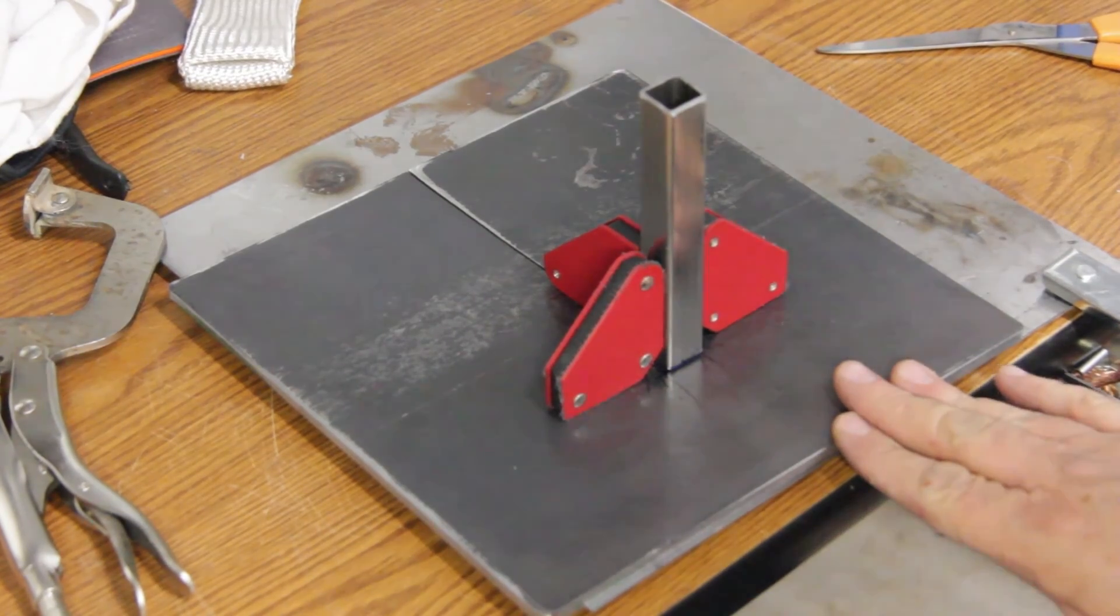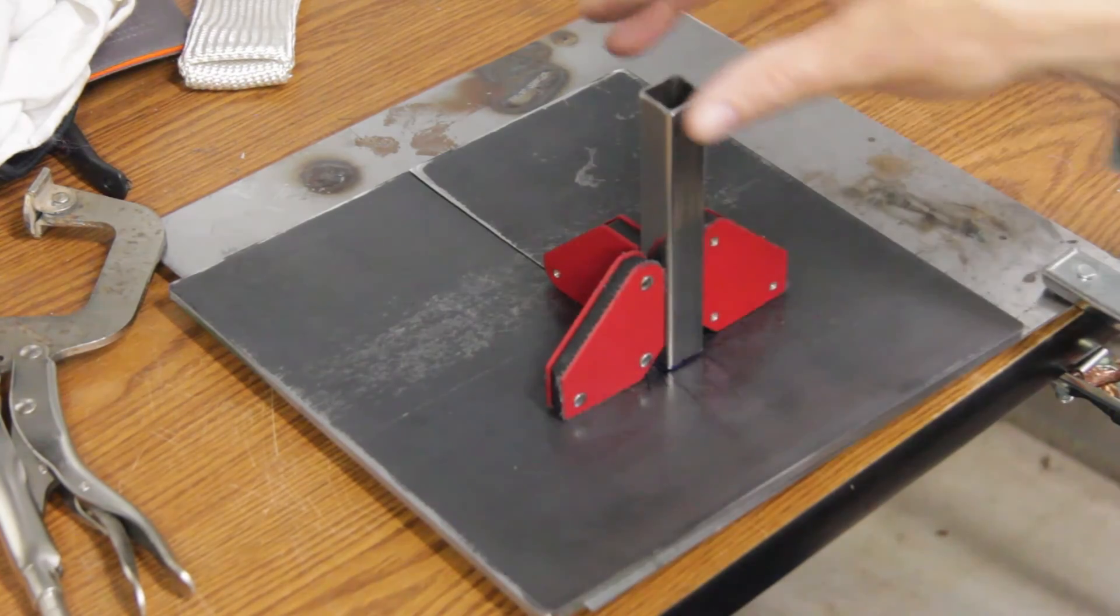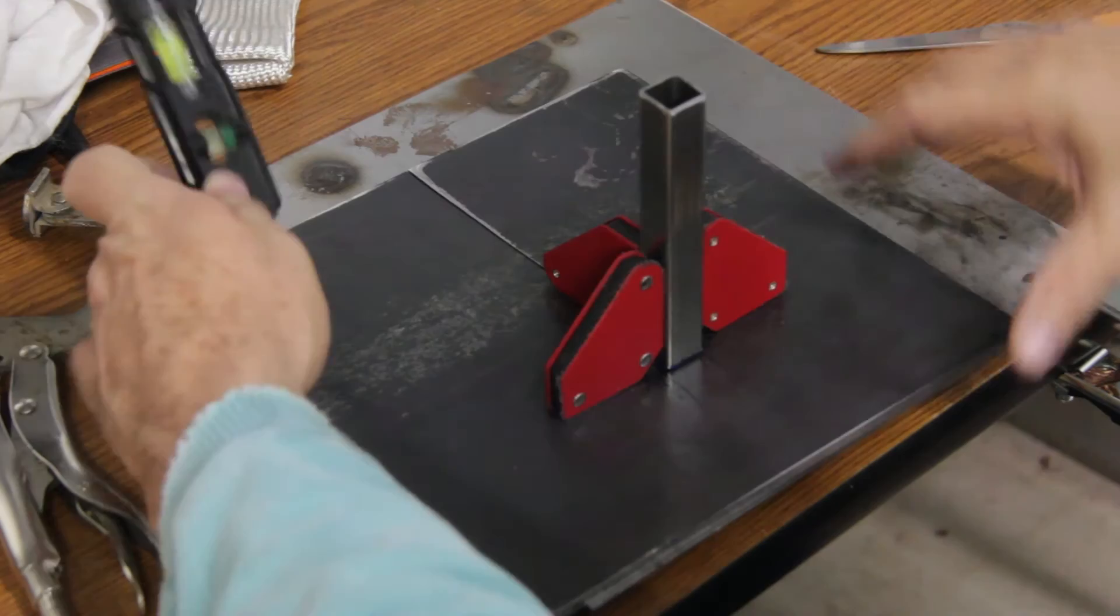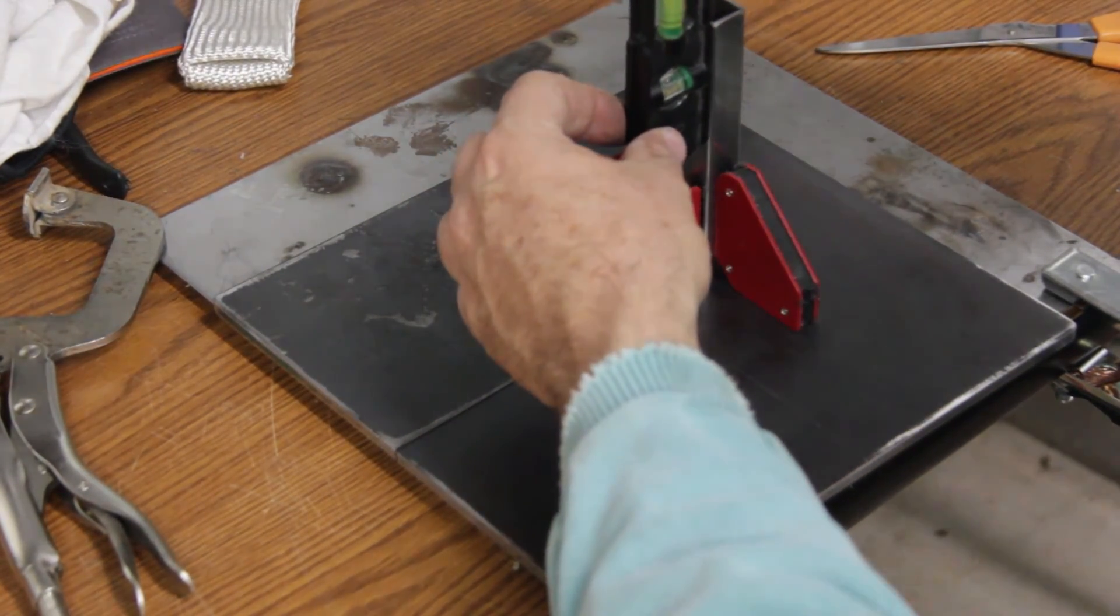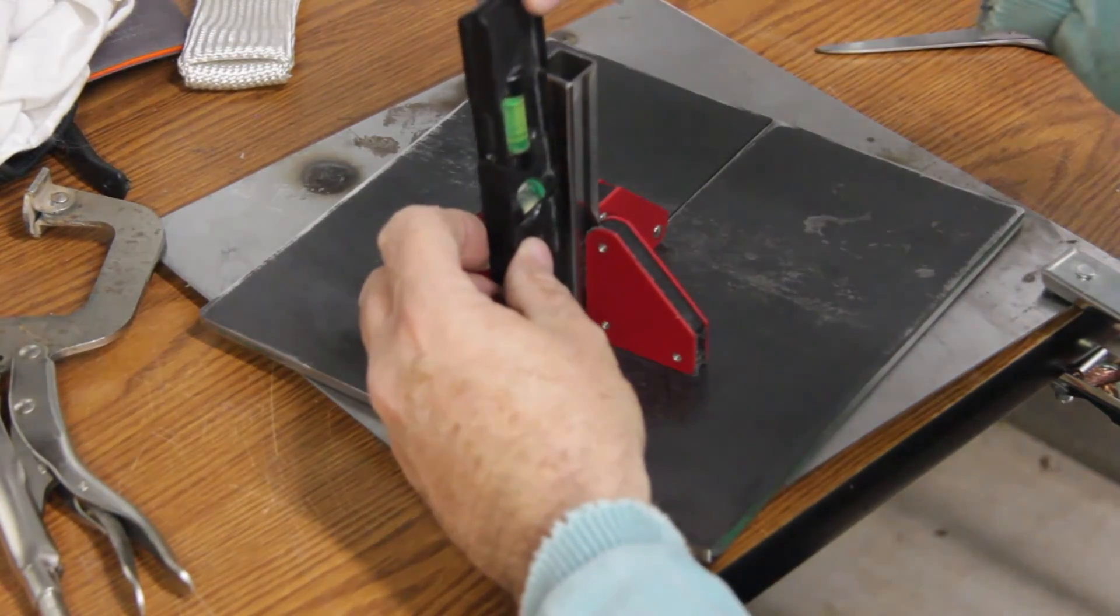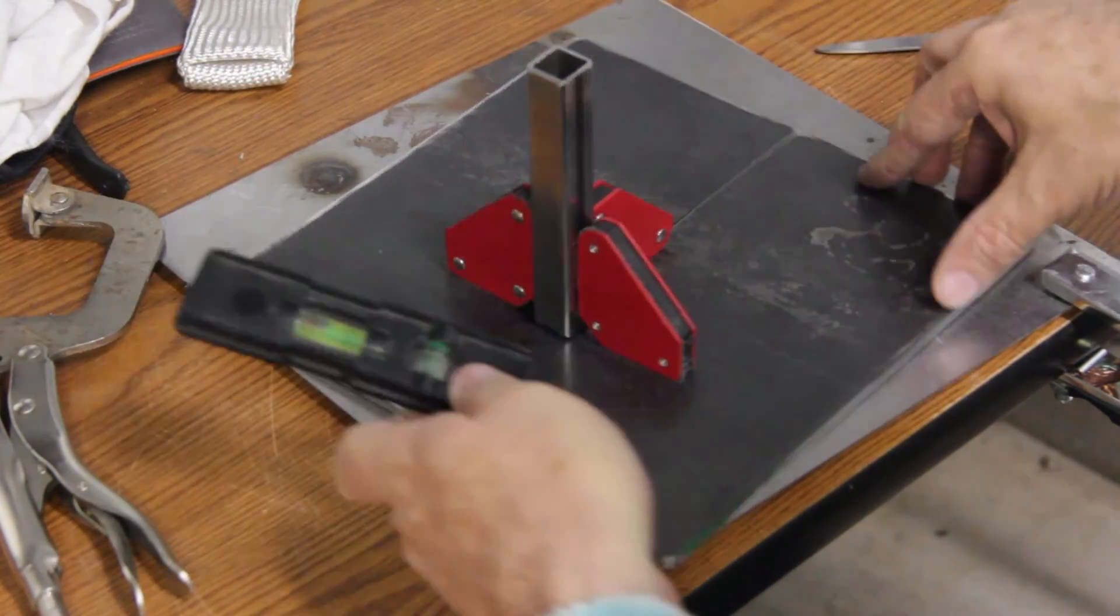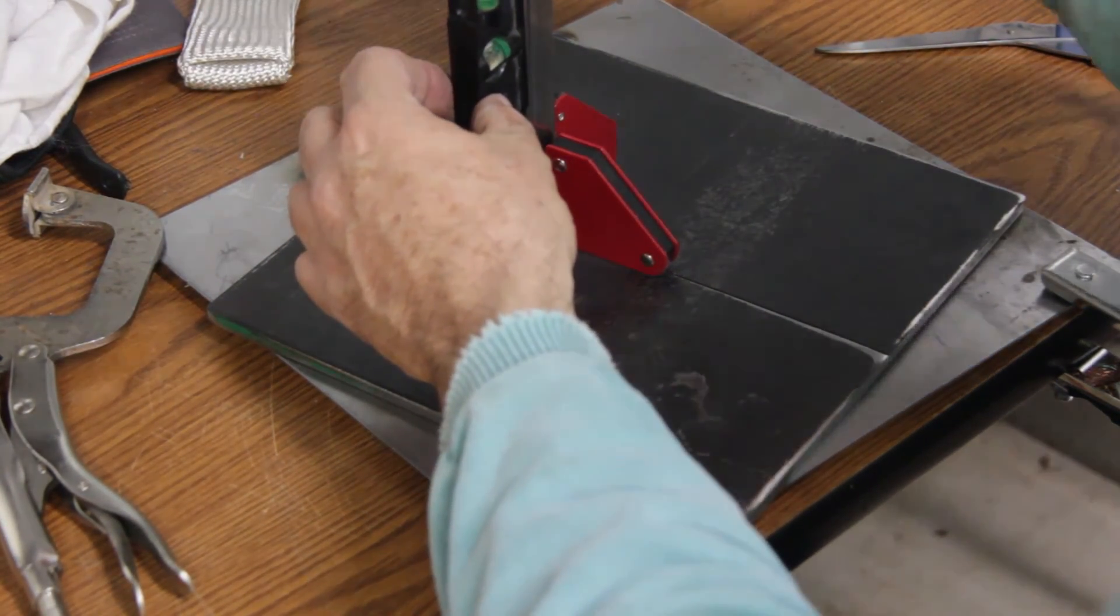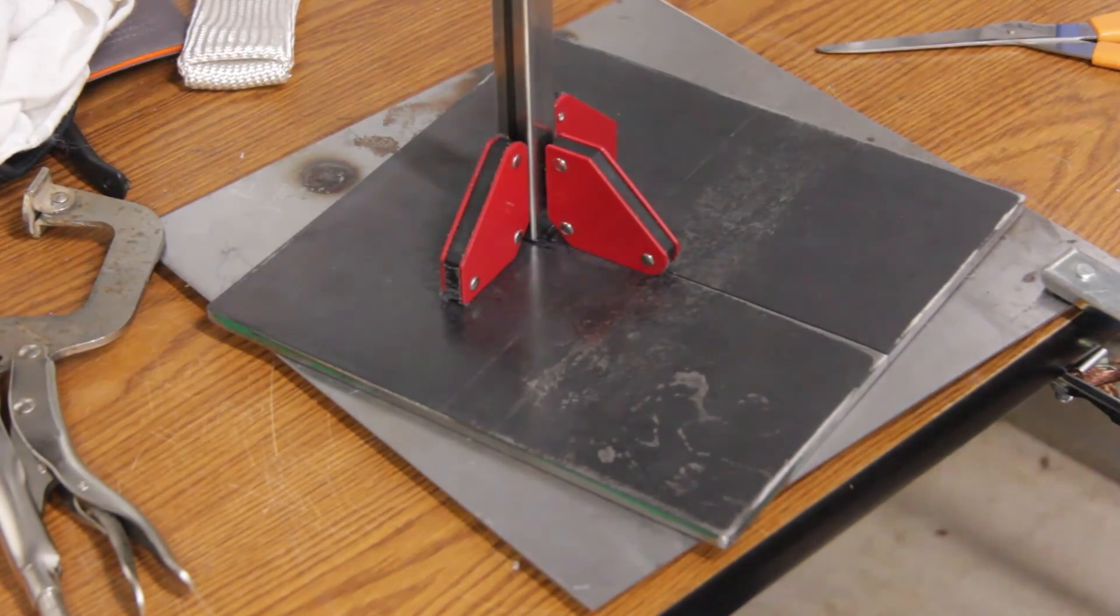On the welding table we have some 90 degree magnets holding this in place, the square tube. It's very important that we take the level and make sure the square tube is square to the base plate because we don't want this plate at an angle when it's mounted to the saw. We're just checking all sides, make sure everything is level, and now we can go ahead and tack weld.